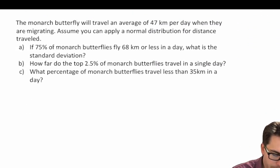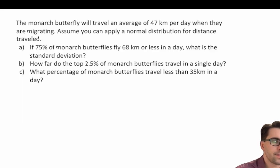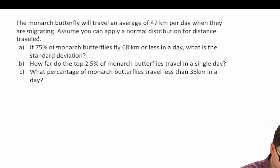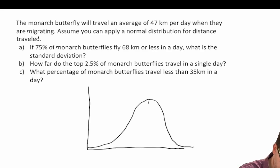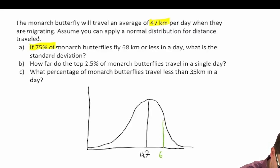Next question: the monarch butterfly travels an average of 47 kilometers a day when migrating. Assume you can apply a normal distribution for the distance traveled. If 75% of monarch butterflies fly 68 kilometers or less per day, what is the standard deviation? We draw our normal distribution centered around the expected value of 47 kilometers, and this 75% condition means the area to the left of 68 should reflect a probability of 0.75.